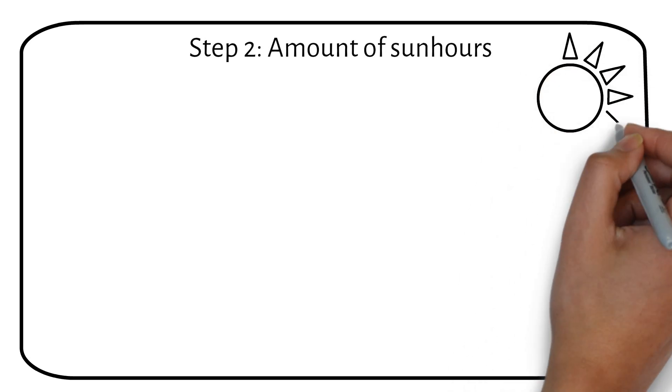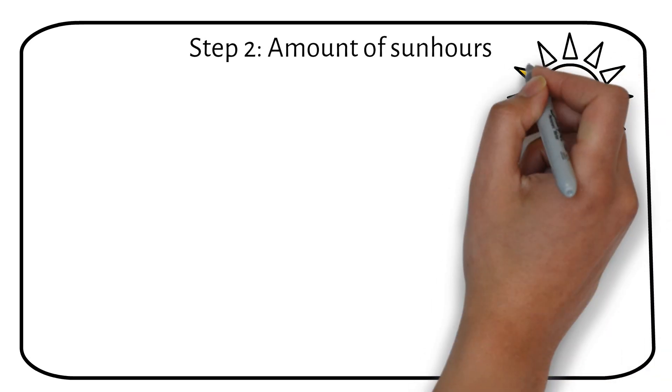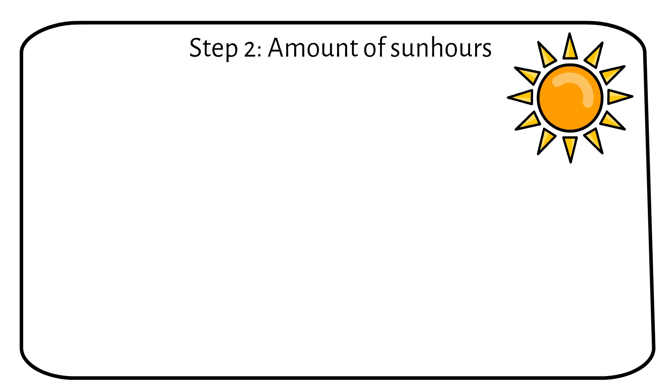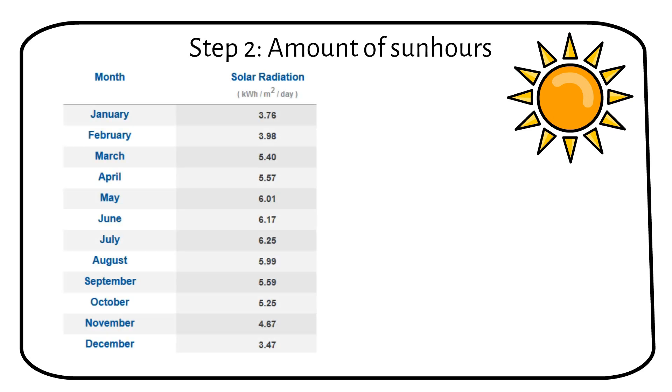Next, we need to figure out how many sun hours you get, which depends on your location and time of year. Most of my subscribers are in Houston, Texas, where the lowest amount of sun hours is December, with 3.5 sun hours per day. I often get questions about sun hours.